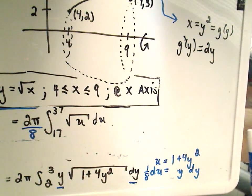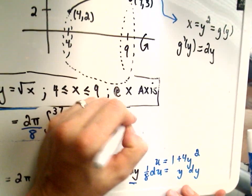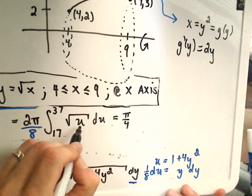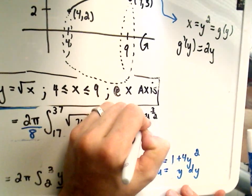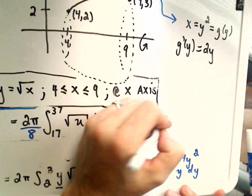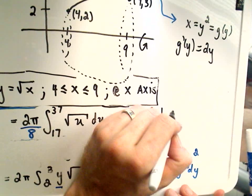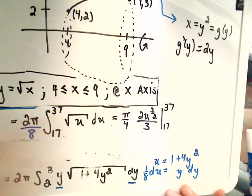Okay? So, but let's go ahead and just compute it out. We're going to get pi over 4 out front. Okay, when I integrate u to the 1 half, I'll get u to the 3 halves. We'll multiply that by 2 thirds. I have to evaluate that from 17 to 37.